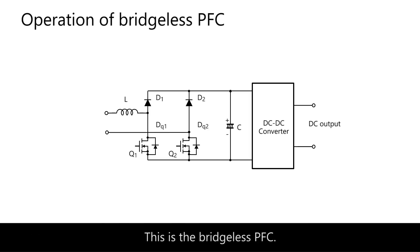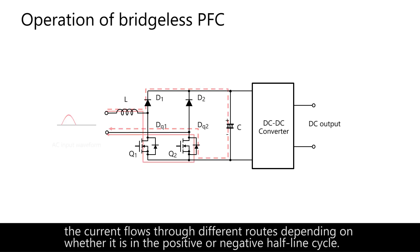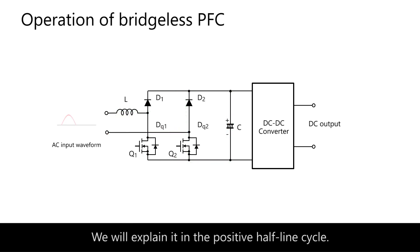This is the bridgeless PFC. As with the conventional boost PFC, the current flows through different routes depending on whether it is in the positive or negative half-line cycle. We will explain it in the positive half-line cycle.